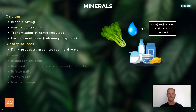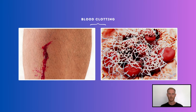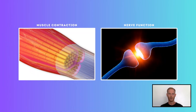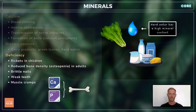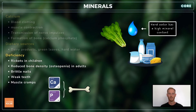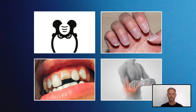Calcium is found in dairy products, leafy greens, and hard water, which is water that has a high mineral content. It assists with blood clotting when vessels are broken, and plays a vital role in muscle contractions and the transmission of nerve impulses. Calcium in the form of calcium phosphate is essential for bone tissue development, so not consuming enough can lead to rickets in children and osteopenia in adults. Other symptoms of a calcium deficiency include weak and brittle nails, teeth that are easily broken, and muscle cramps.